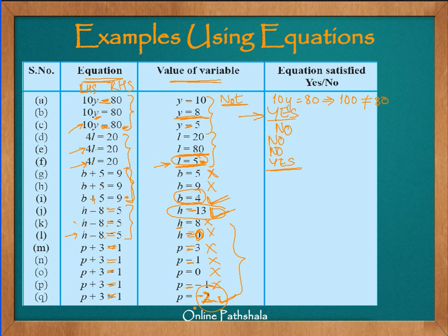So this is how we can understand that there is just one definite value of a variable which will satisfy an equation, which we understood using the examples.